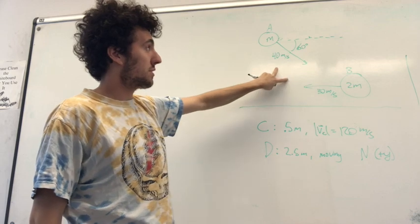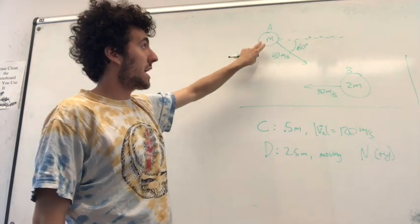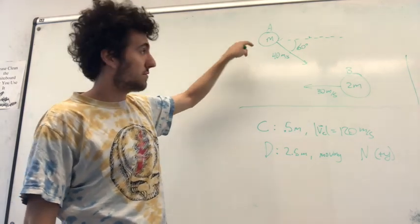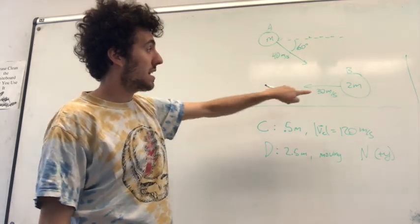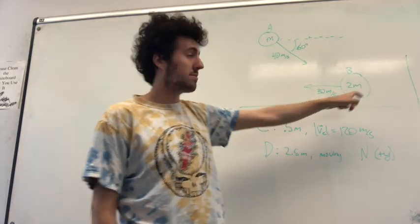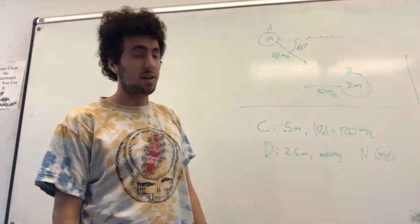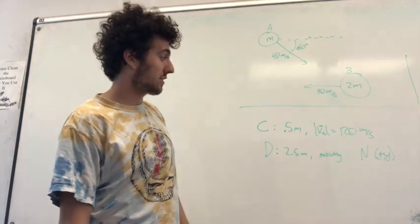We're given a situation where we have two asteroids. One asteroid A with mass M is traveling 40 meters per second at an angle of 60 degrees south of east, and asteroid B has a mass 2M, traveling 30 meters per second due west in the negative x direction.